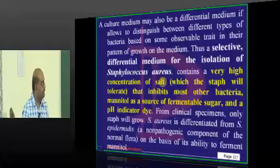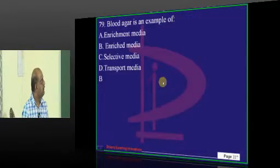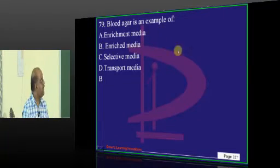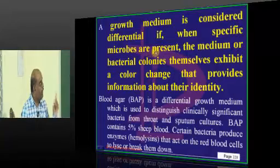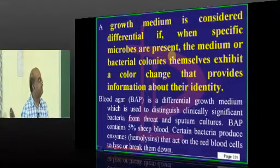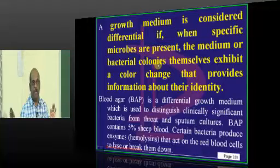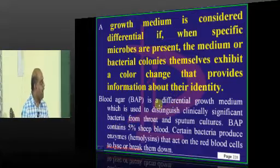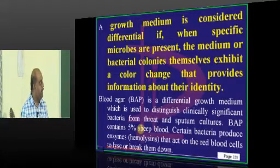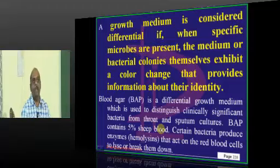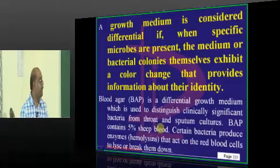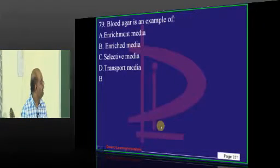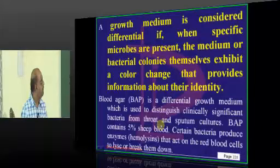Blood agar is typically called which kind of medium? A growth medium is called differential when specific microbes are present and there will be some color change. Blood agar is a differential growth medium mainly to differentiate the various types of streptococci into alpha hemolytic, beta hemolytic, etc. So it should be a differential medium fundamentally.